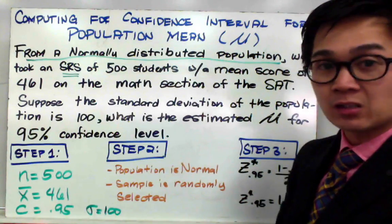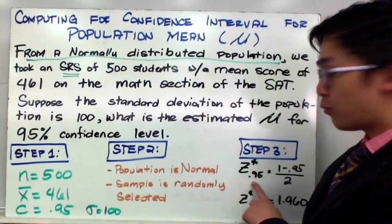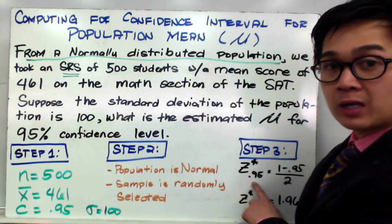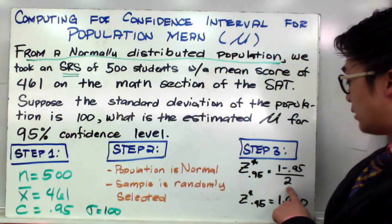For step number three, we need to find the Z star for our normal distribution. To find the Z star of 0.95, it's given by the formula 1 minus C all over 2, which is 1 minus 0.95 divided by 2.